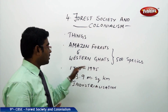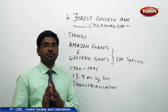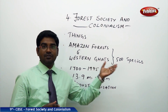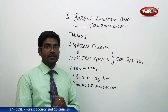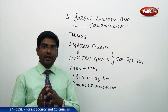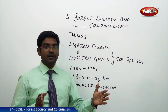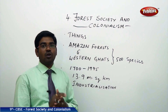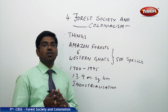If you look at the Amazon forest or the Western Ghats forests, they are a long stretch forest where you find 500 different varieties of plants and species living there. The UN has recognized these as World Heritage Sites recently. From 1700 to 1995, people started to cut down trees — 13.9 million square kilometers of forest were cleared for various reasons like industrialization or construction, which is nearly 9.3% of the entire forest cover on earth.